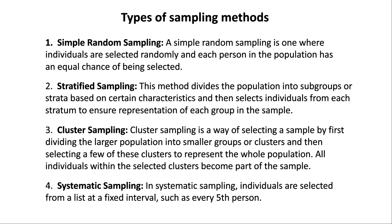Simple random sampling is one where individuals are selected randomly and each person in the population has an equal chance of being selected.